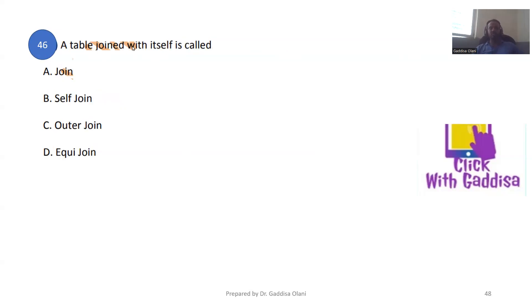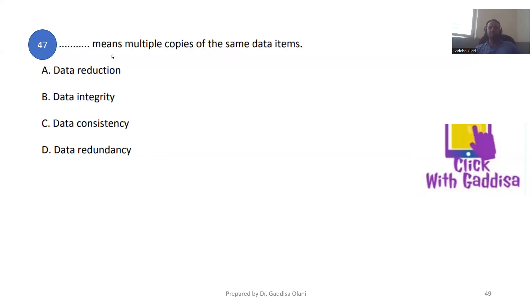A table joined with itself is called a self-join. Multiple copies of the same data items are called data redundancy.